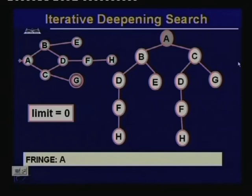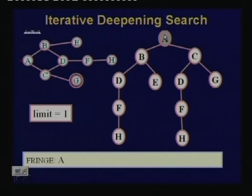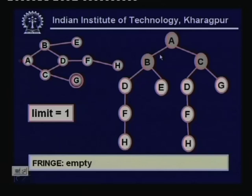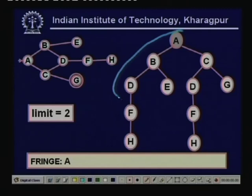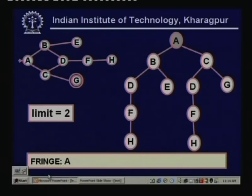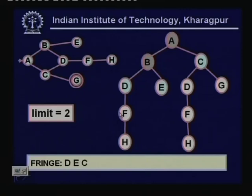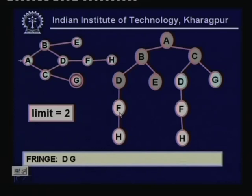For iterative deepening search on the same graph: with limit 0 only A is expanded. With limit 1 we get A, then B, then C. In the third iteration with limit 2, we search the tree depth-first: A is removed, B and C added; B removed, D and E added; D expanded; E expanded; C expanded, D and G added; D expanded; G expanded — goal found at limit 2.